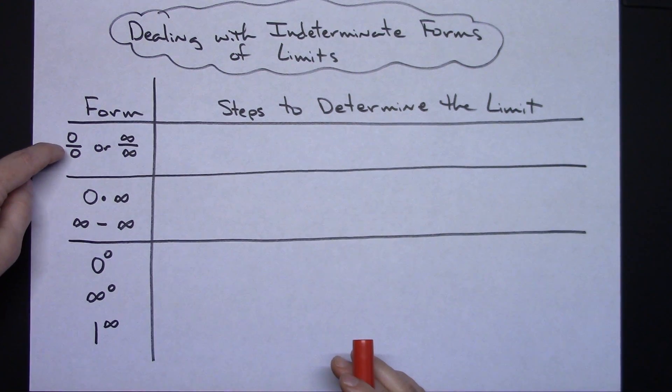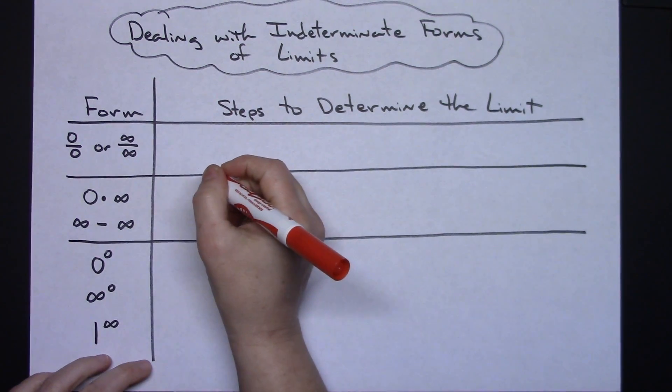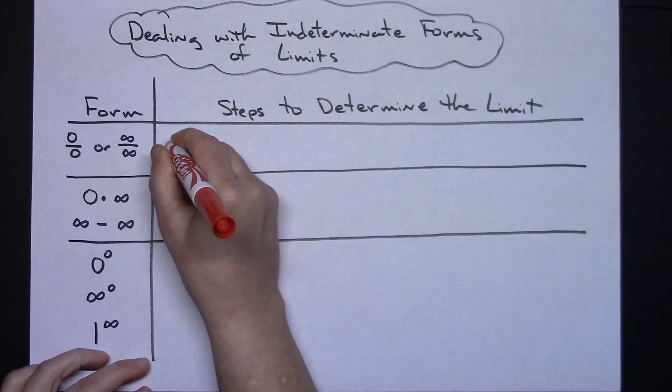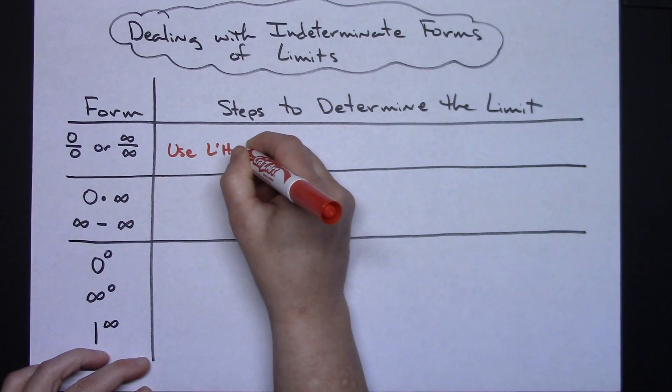I've broken these down into three different scenarios. If we have an indeterminate form of our limit where we get zero over zero or infinity over infinity, the most effective method for determining your limit would be to use L'Hopital's rule.